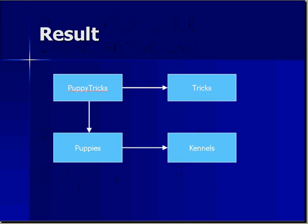The result is four tables: puppies linked to kennels, puppy tricks that get their puppy number from the puppy table and their trick ID from the tricks table. Four tables is the fully normalized, third normal form version of our database. This is what you want to shoot for so that SQL can properly query the system and you're not carrying along a lot of redundant or duplicative information.